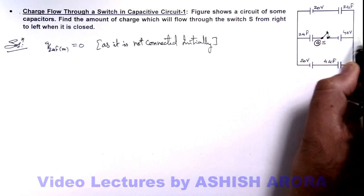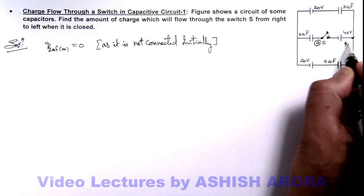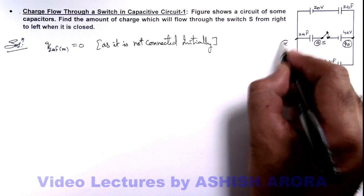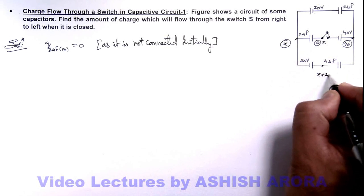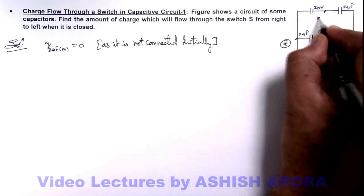So obviously the potential here will be 40 volts. Here we can take potential to be x, then potential at this point will be x plus 20, and here it'll be x minus 20.